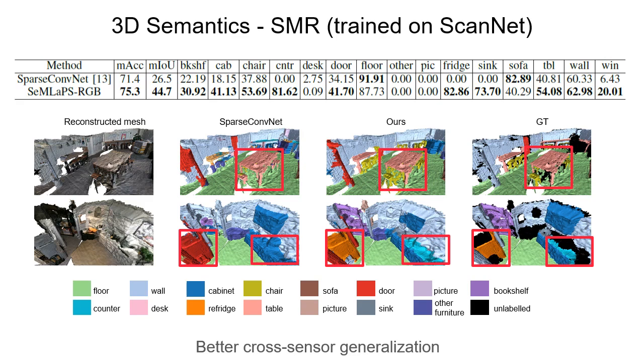From the figure, apart from the classes already mentioned in previous ScanNet results like refrigerator and counter, our method also performs much better on thin structures and small objects, like the stools in the first row.